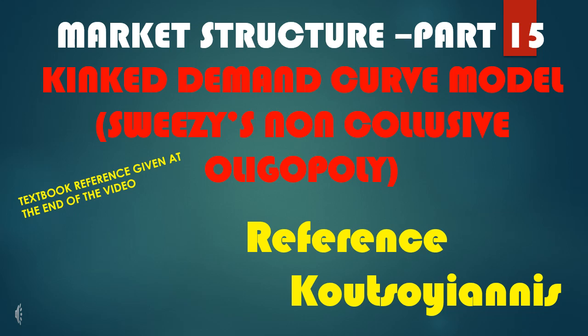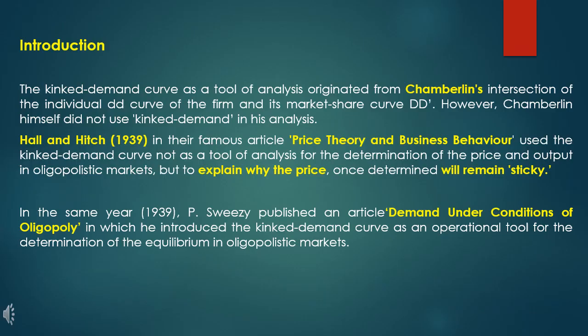The non-collusive oligopoly model of Paul Sweezy is the kinked demand model. If we have a straight line, we have a twist, a curl, a bend, and we have a kinked demand curve. The kinked demand curve is similar to our usual demand curve.